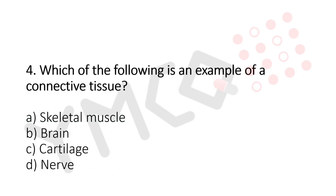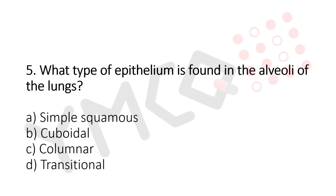Question 4: Which of the following is an example of connective tissue? Option A: skeletal muscle. Option B: brain. Option C: cartilage. Option D: nerve. The answer is Option C, cartilage.